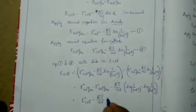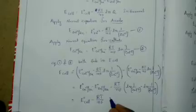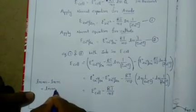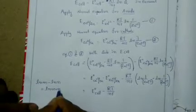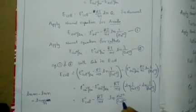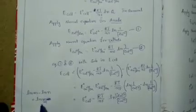Using the logarithm rule: ln(m) minus ln(n) equals ln(m/n). Applying this rule here, we can write ln([Zn²⁺] / [Cu²⁺]).